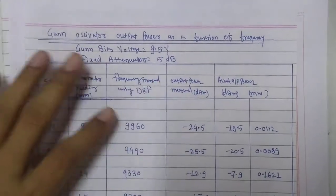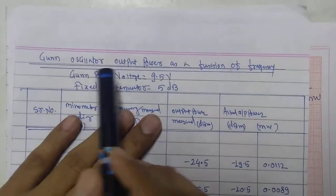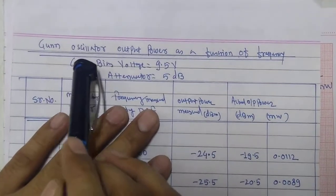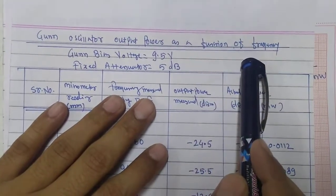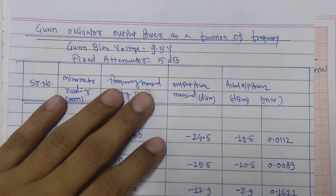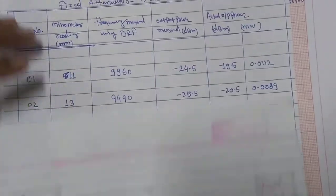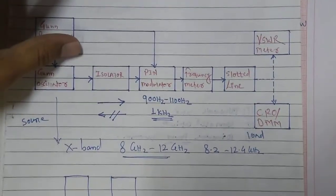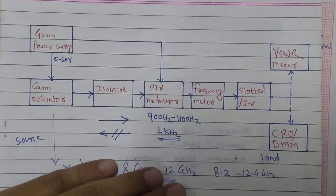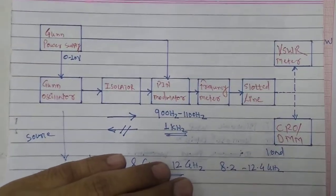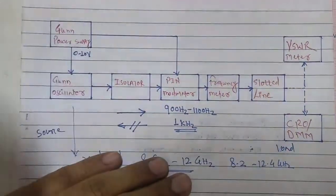Hello and welcome to Microwave Laboratory. In this lab, we will try to understand gun oscillator output power as a function of frequency. If you have directly come to this video, please go back and see our earlier videos so that you can understand the generalized setup of microwave test bench and basic experiments carried out using this particular microwave test bench.